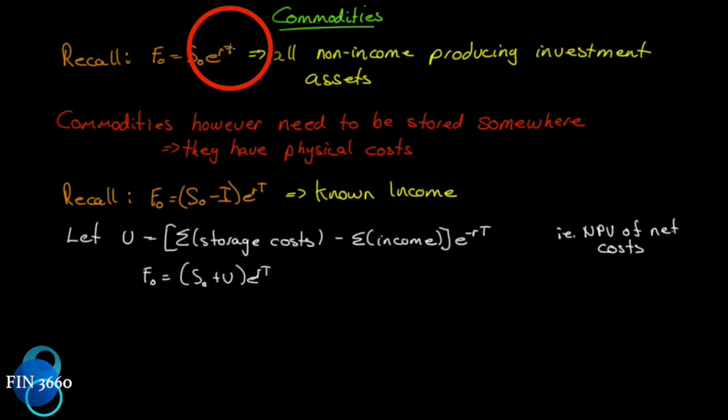All non-income producing investment assets can be priced - the futures price can be derived with this formulation. Commodities, however, need to be stored somewhere; they have physical presence and physical costs. You've got to put them somewhere. For a lot of the financial assets that organizations, firms, funds, individuals, traders, speculators, and hedgers trade, there's no physical presence. A lot of times they're just bits and bytes in the network, just an electronic recording that I have shares of stock or an option on shares or a futures contract on the index.